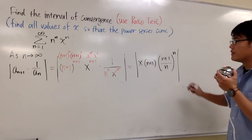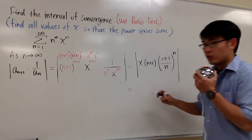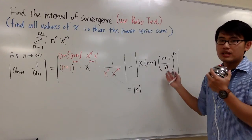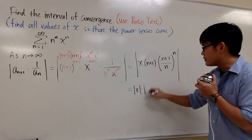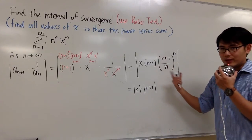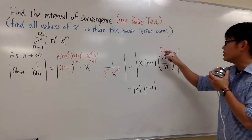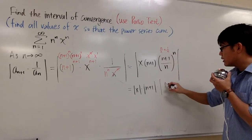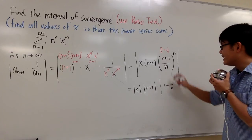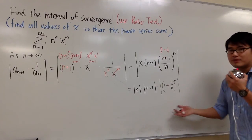Now let's break this all apart. We have absolute value of x, because the absolute value of a product is the product of the absolute values. The second thing is absolute value of (n+1). The third part, (n+1)/n, is the same as 1 plus 1 over n, and that whole expression is raised to the n power.